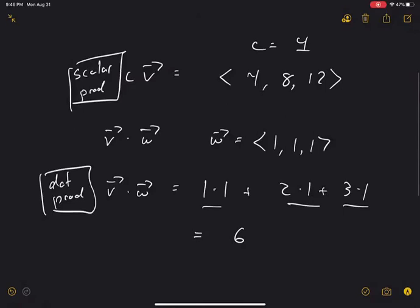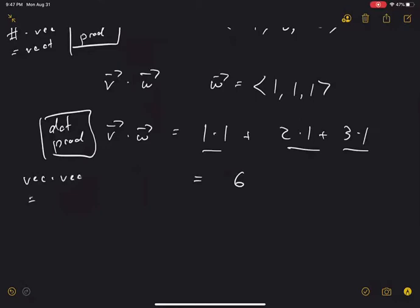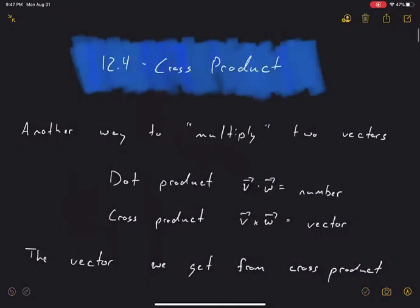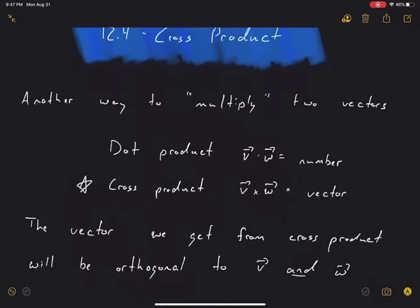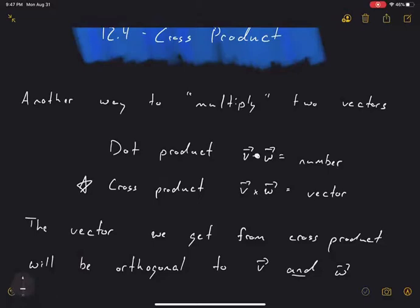Now we introduce cross product. In cross product we multiply a vector by a vector and get a vector out. Note the notation: for dot product we have a dot in the middle; for cross product we have an X or cross in the middle — an easy mnemonic device to keep our notation straight.